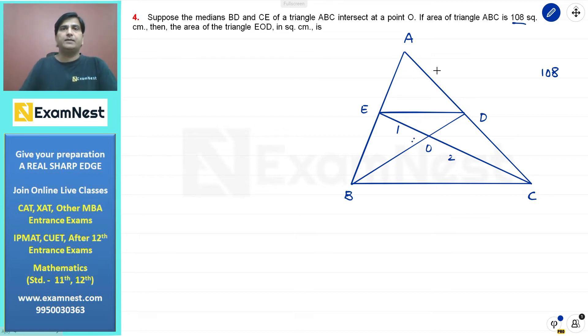If we have a median, then the triangle is divided into equal parts. That means, ABC if we have an area of 108, then BEC the area is half, which is 54 cm². Then BEC is 54.